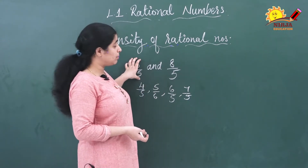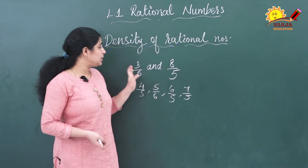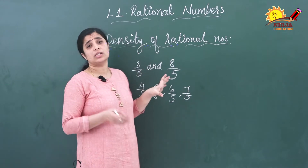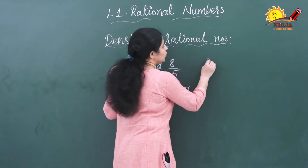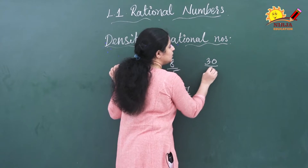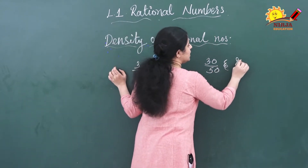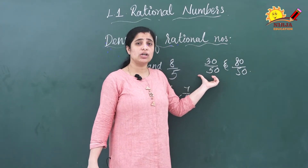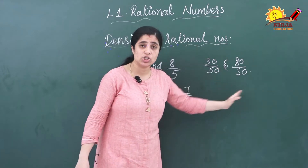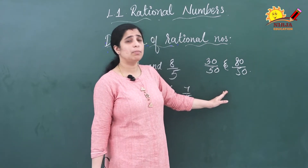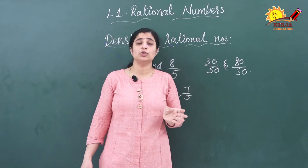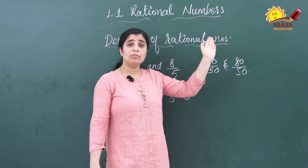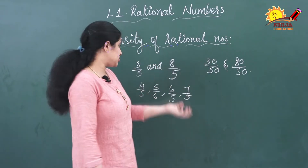Again, I can change these two rational numbers into equivalent rational numbers. I am going to multiply both rational numbers by 10 — that means both numerator and denominator. When you multiply, you will get 30/50 and 80/50. In between these two rational numbers, there are many numbers: 31/50, 32/50, 33/50, and so on up to 79/50.